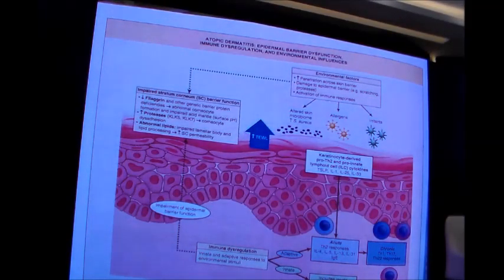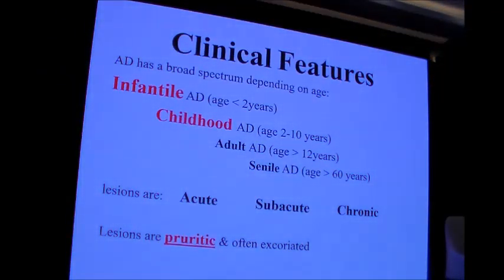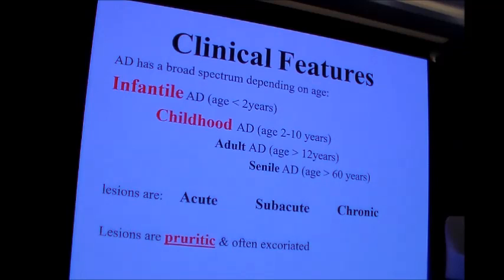This figure shows several pathogenetic factors playing a role in atopic dermatitis. Regarding clinical features, atopic dermatitis has a broad spectrum depending on age: infantile type below 2 years, childhood type from 2 to 10 years, adult type above 12 years, and senile type above 60 years. In all stages, lesions are either acute, sub-acute, or chronic, and in all cases pruritus is a cardinal symptom.